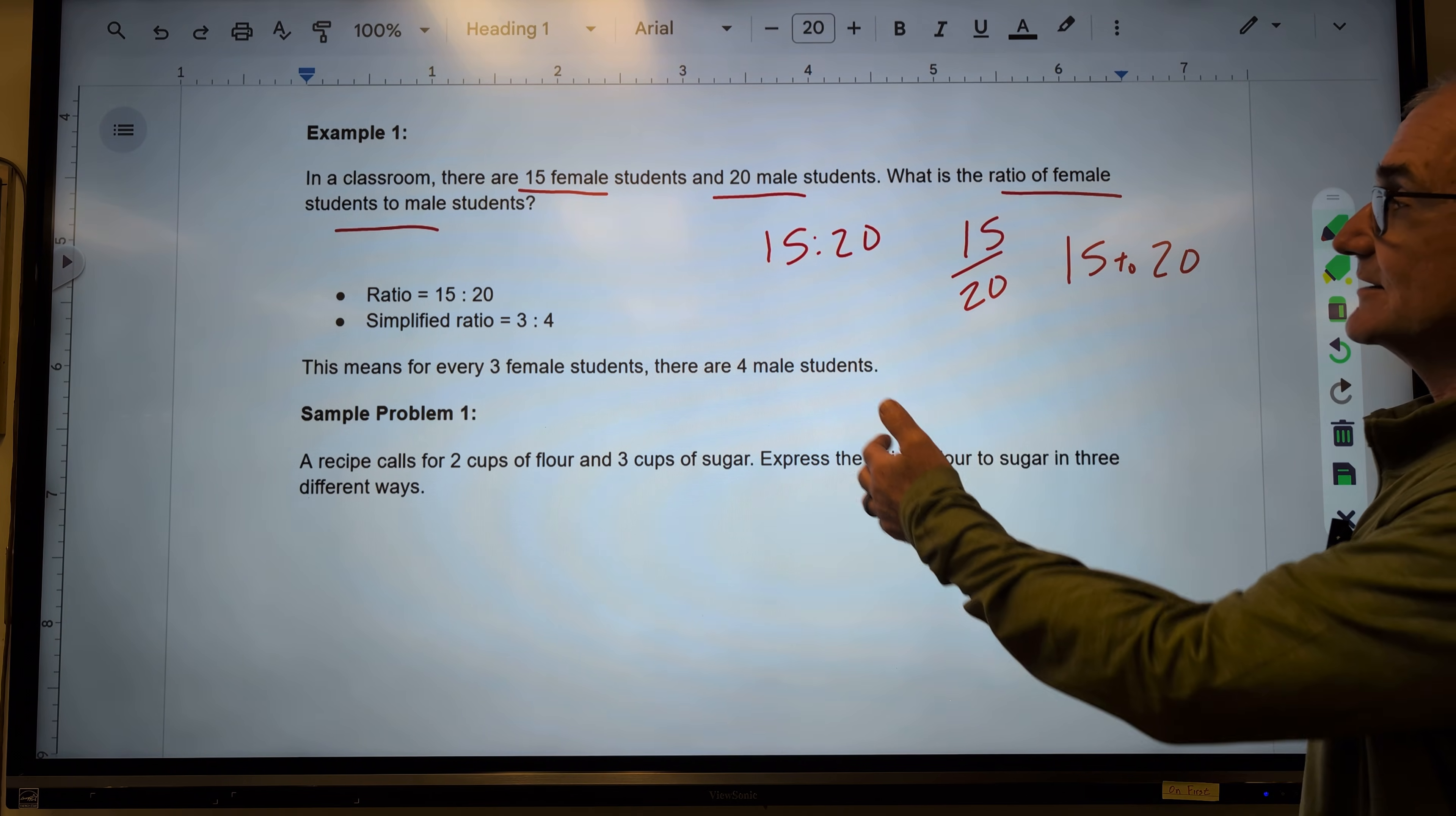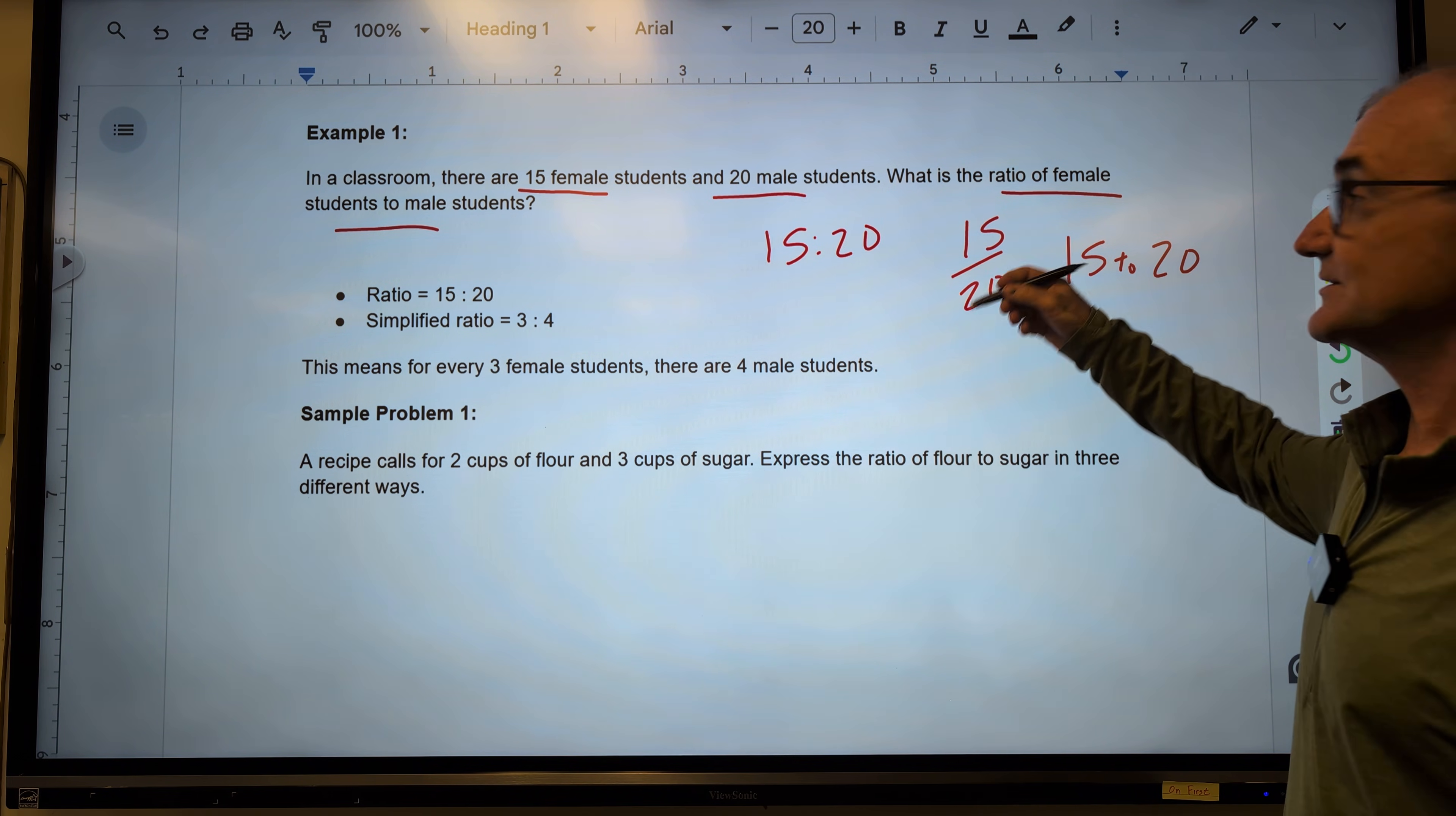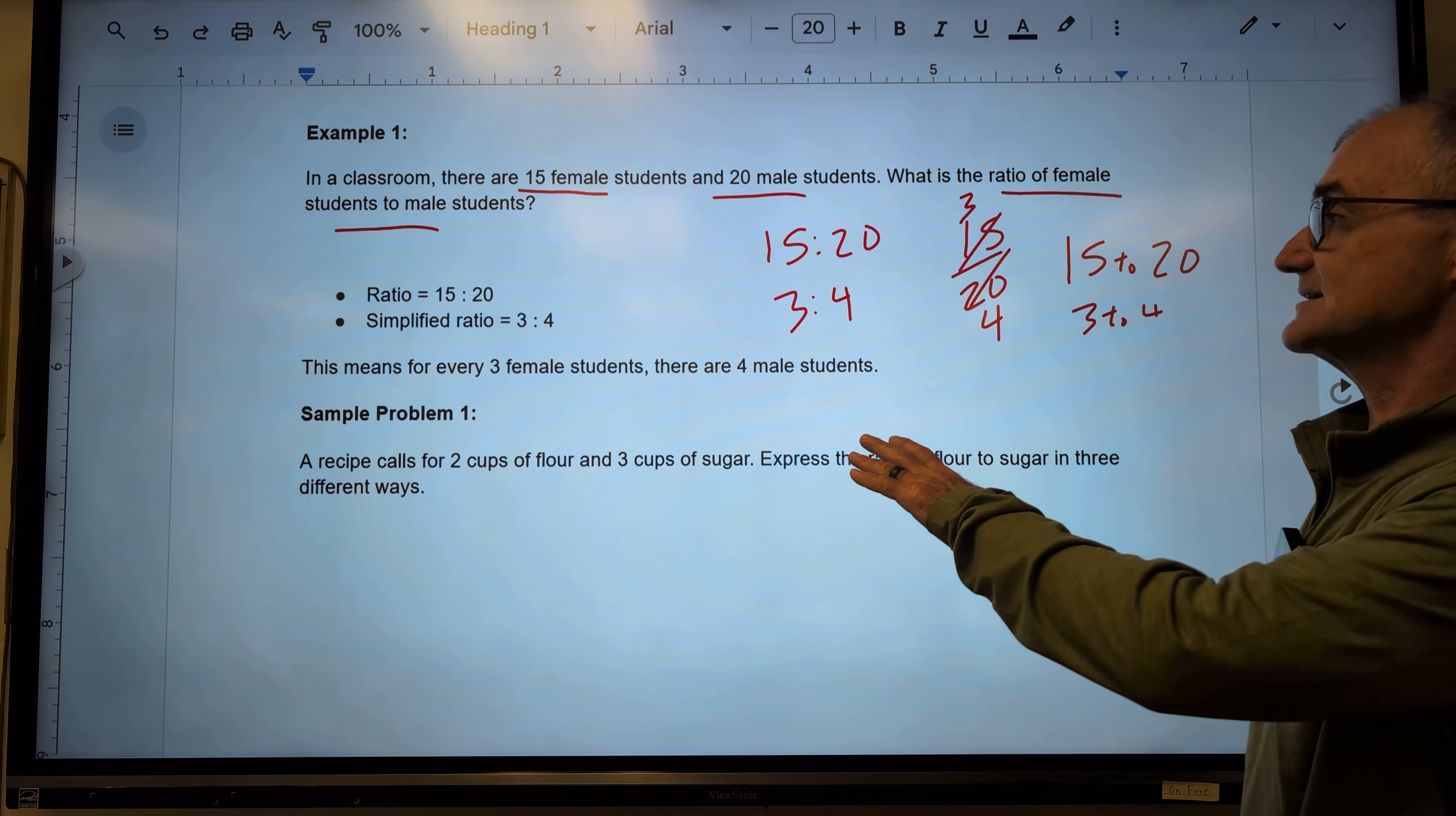The other thing you want to do is reduce that. Because it is a fraction, you could look at what goes into both of these numbers. I could see 5 goes into 15 three times and into here four times. So it is a ratio of 3 to 4 or a ratio of 3 to 4. All of those are equivalent, meaning they're exactly the same.